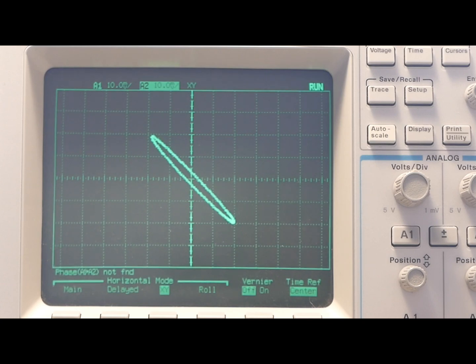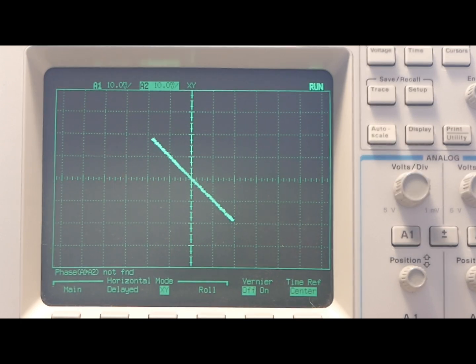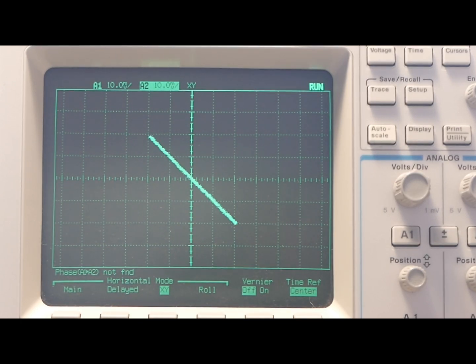So let's just start sweeping the frequency. Definitely an improvement there. So now it's acting like a balun should be acting. The angle of that line is at 45 degrees. I'm now sweeping up to 70, 80 MHz. So that's behaving as you'd expect.